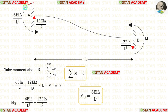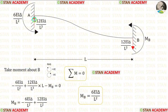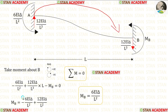Clockwise will be positive and anticlockwise will be negative. MA is acting in the anticlockwise direction. So, it will be negative. RA is acting towards point B in the clockwise direction. So, it will be positive and the distance is L.